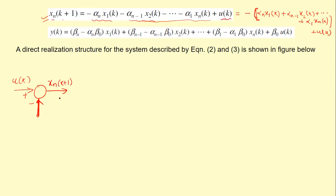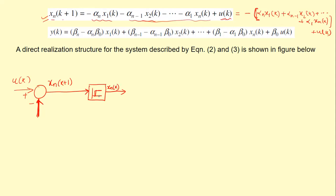When we input x_n(k+1) to a delay element, it results in x_n(k) at the output of that delay element.